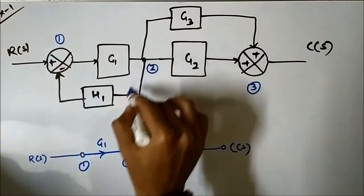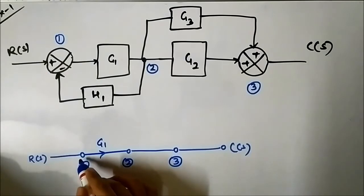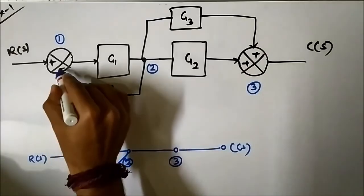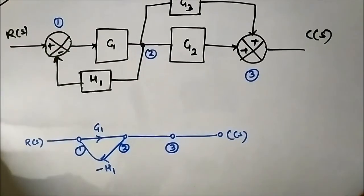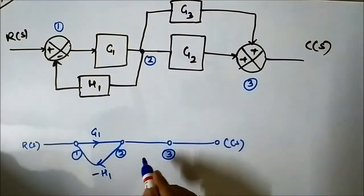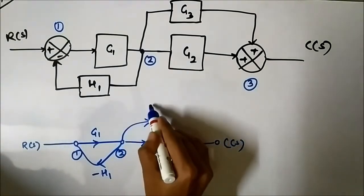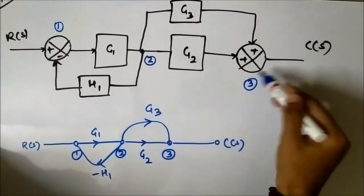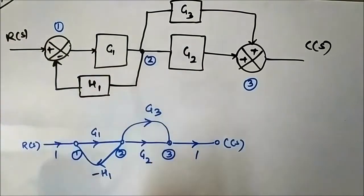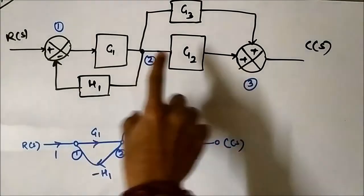Between 2 and 1, there is a negative feedback path with gain H1, so we represent it as minus H1. Between 2 and 3, there are two forward path blocks G2 and G3. Between 3 and CS, there is unity gain. Between RS and 1, there is also unity gain. This is how we converted the block diagram into the signal flow graph — we have represented each of the summing points and takeoff points as separate nodes.